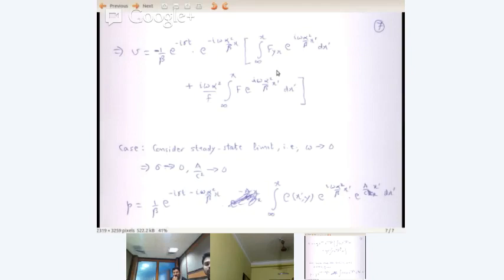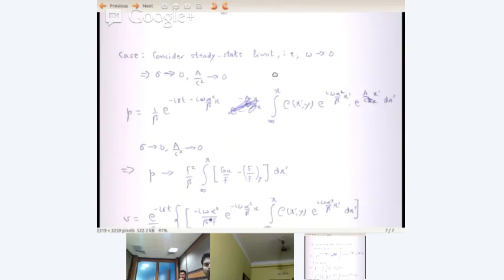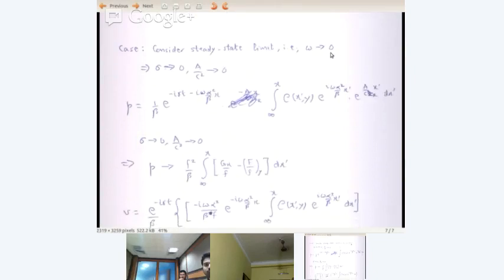If you look at the classical solutions of Sverdrup and so on, you will find that we basically looked at the zonal winds, easterlies and westerlies. Now suppose you look at the steady state limit, that is omega going to zero. So we are saying sigma goes to zero and A by C squared goes to zero. Now what happens? The difference now is that beta is non-zero.